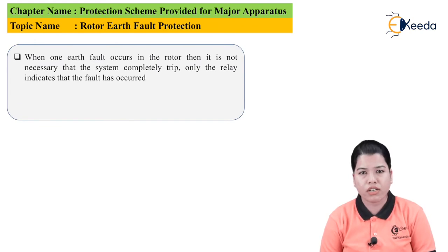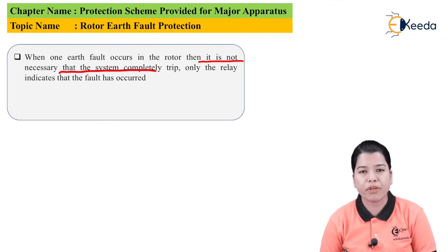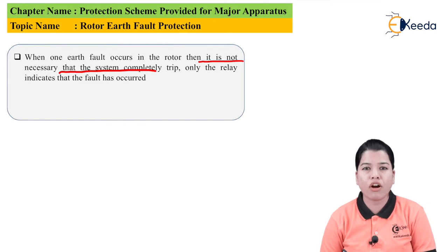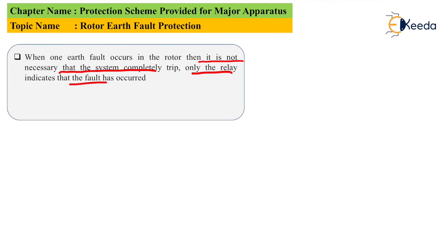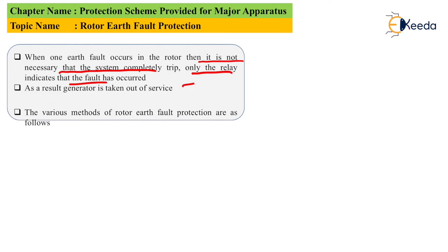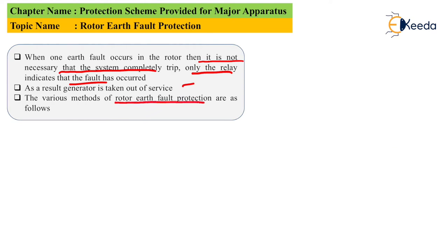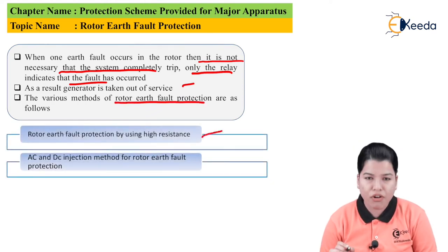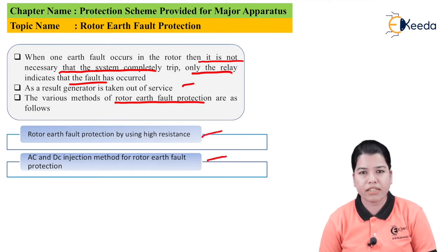When one earth fault occurs in the rotor, it is not necessary that the system will completely trip, because there is no rise in fault current and the system will not consider it as a fault condition. The system will not trip — only the relay will indicate that the fault has occurred. As a result, the generator can be taken out of service. The two methods of rotor earth fault protection are: first, rotor earth fault protection using high resistance, and second, the AC and DC injection method.